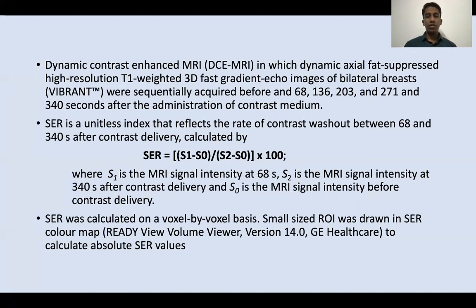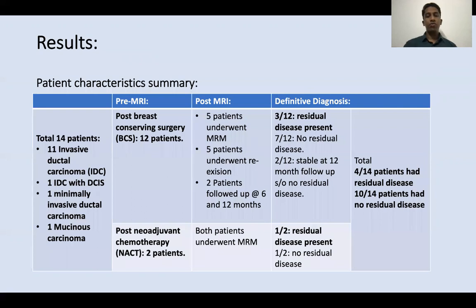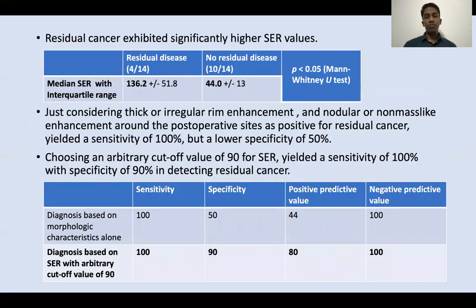A total of 14 patients met our inclusion criteria, out of which 12 had undergone breast conserving surgery and 2 had undergone neoadjuvant chemotherapy for breast cancer before undergoing MRI at our institute. On follow-up, 4 patients were histopathologically proven to have residual breast carcinoma, and the remaining 10 patients had no residual breast disease. It was found that patients with residual breast carcinoma had significantly higher SER values compared to patients with no residual breast carcinoma.